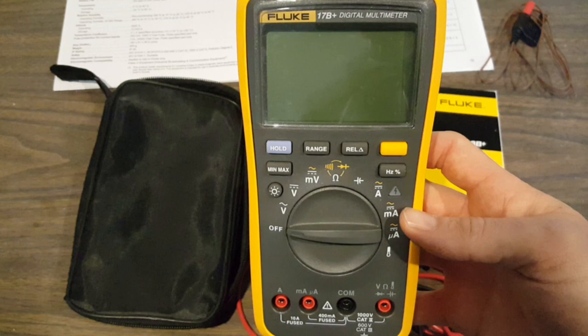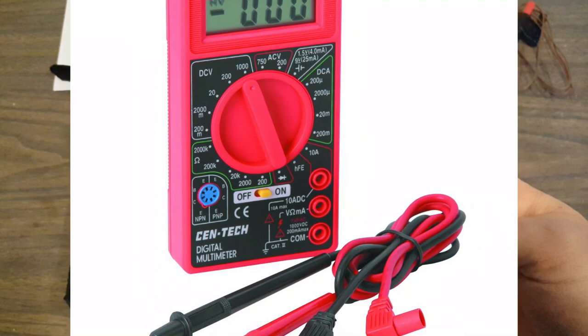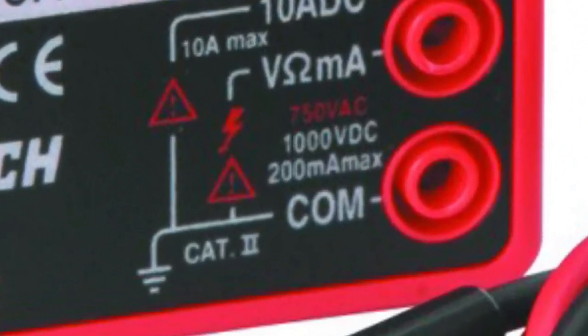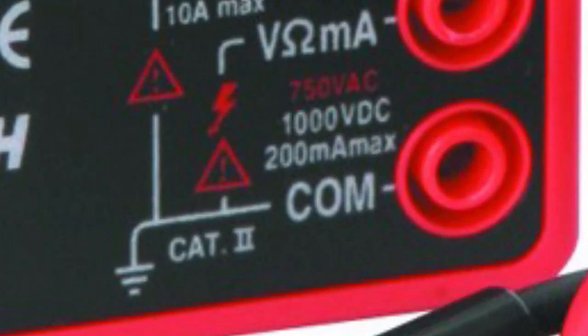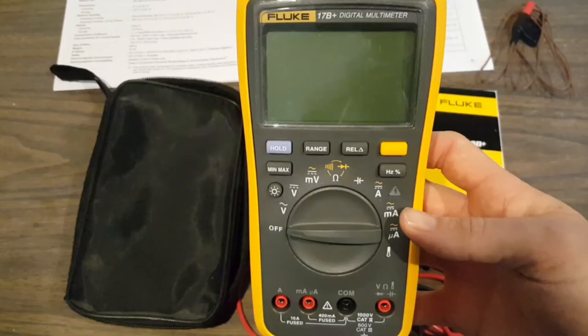The meter manufacturers can self-assign these CAT ratings to their products. And this leads to some pretty exaggerated and downright dishonest practices. Imagine labeling a meter CAT 3 600 volts when you only use a 250 volt fuse inside it. Now that's why there are independent test labs,